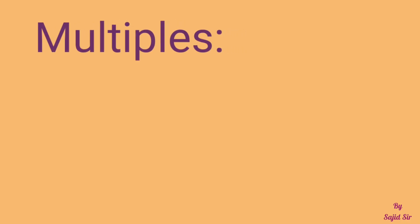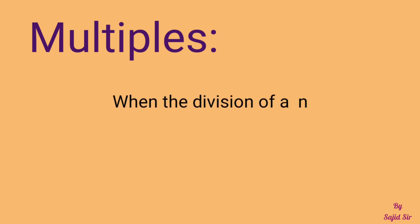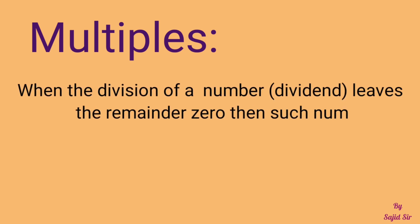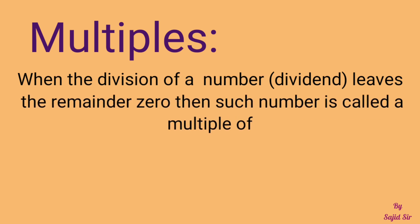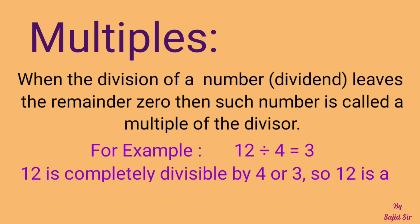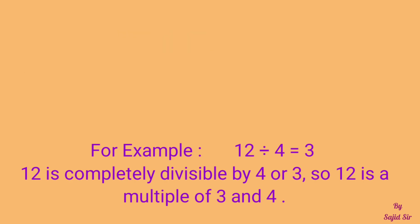Multiples: When the division of a number or dividend leaves the remainder 0, then such number is called a multiple of the divisor. किसी number को divide करने पर अगर remainder 0 आता है तो ऐसे number को हम multiple कहते हैं। For example, अगर हम 12 को 4 से divide करें तो 3 आता है। So, 12 is completely divisible by 4 and 3. So, 12 is a multiple of 3 and 4.